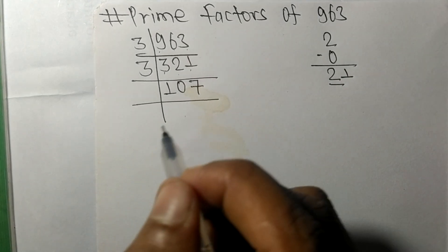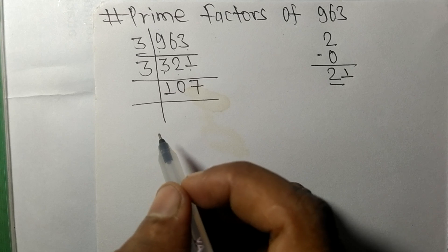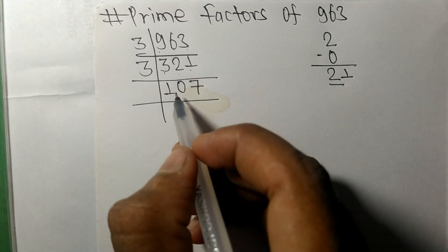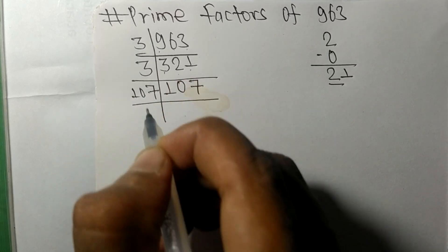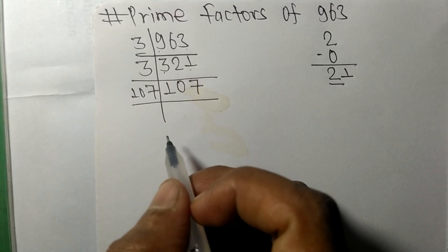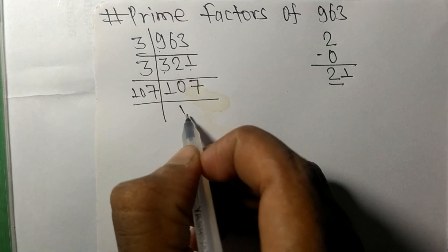107, which is a prime number. So it is exactly divisible by 107 only, and on dividing we get 1.